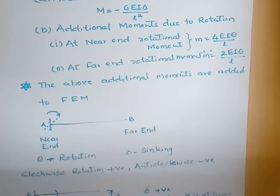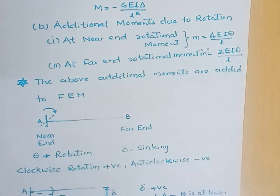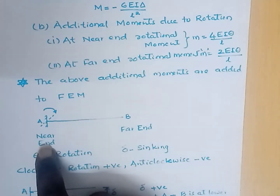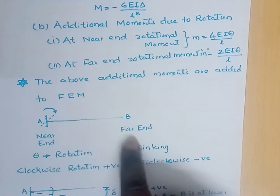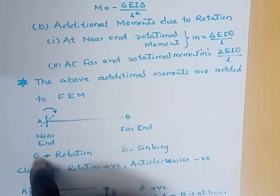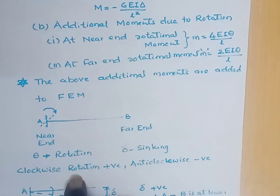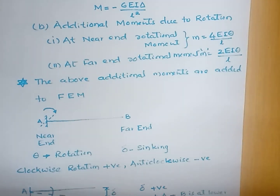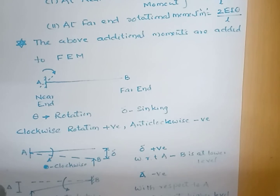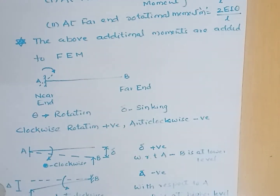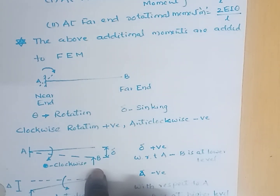In the figure, this end is the near end and this is the far end. The sign convention: if the rotation is clockwise, theta is positive; anti-clockwise rotation is negative. Similarly for sinking of the support — if with respect to A, support B is settled in the downward direction, then delta is positive.